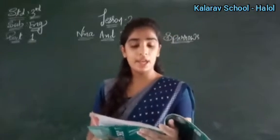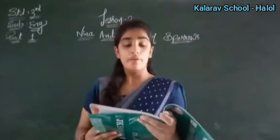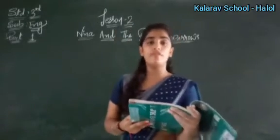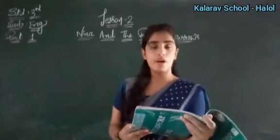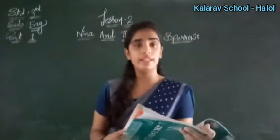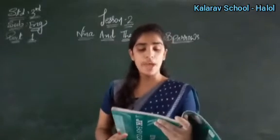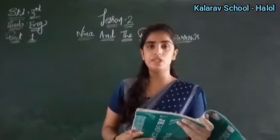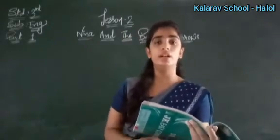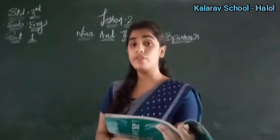Nina, her father, mother and a little brother were all going to Delhi for a wedding. The whole family — Nina, her mother, father, brother — where were they going? They were going to Delhi for a marriage. Everyone was happy except Nina. Her mother, father and little brother — three of them were happy, but Nina was not happy.